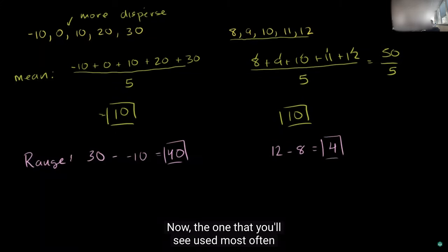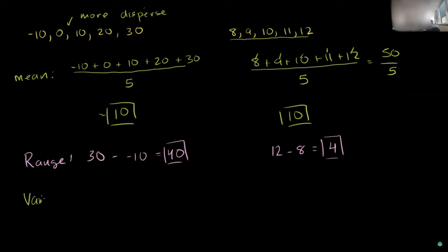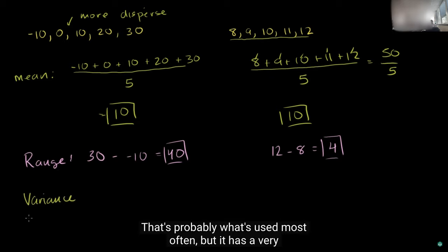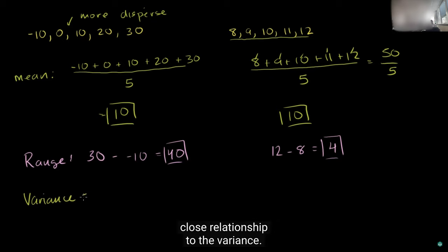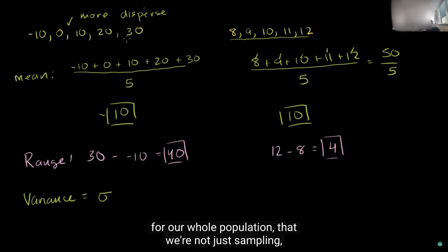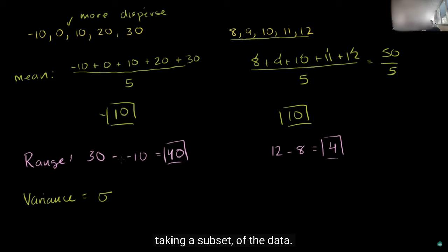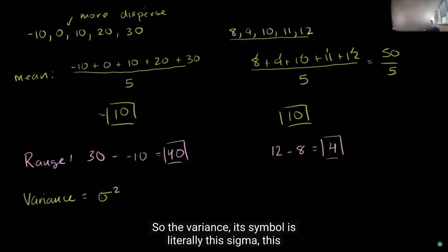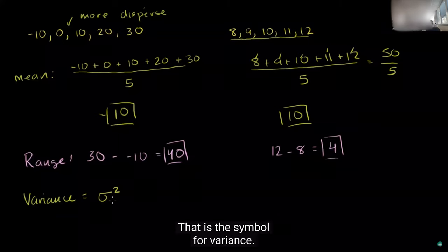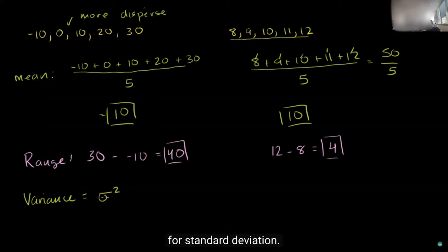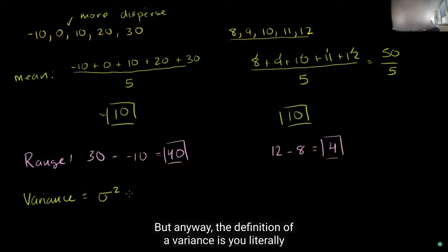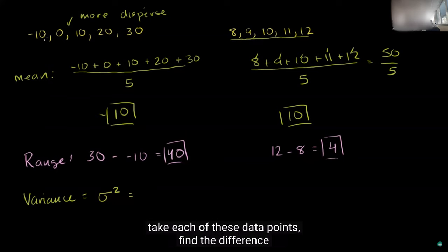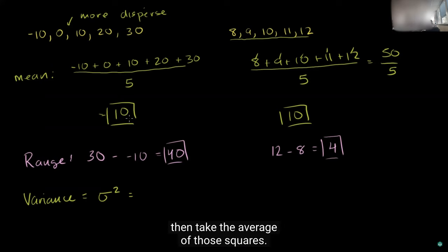The measure you'll see used most often is called the variance — and in this video you'll also see the standard deviation, which is probably used most often and has a very close relationship to the variance. The symbol for population variance is sigma squared. The definition of variance is: take each data point, find the difference between that data point and the mean, square it, and then take the average of those squares.